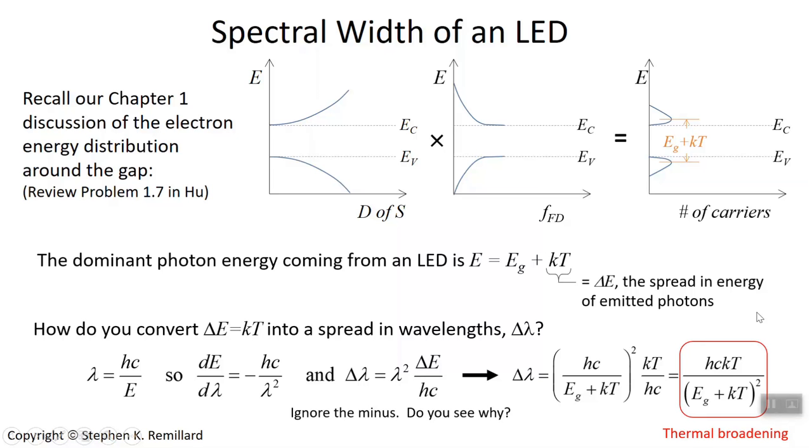We have an expression for the spectral width of an LED. These are all constants: hc and k, Planck's constant, Boltzmann's constant, speed of light, and then temperature. So if you take away temperature, there will be no width. That's why it's called thermal broadening, because the temperature does it to us.